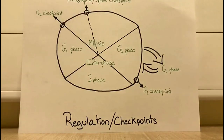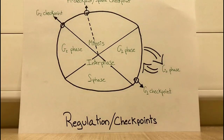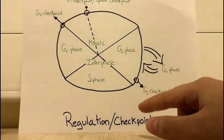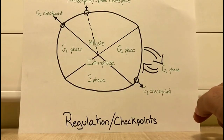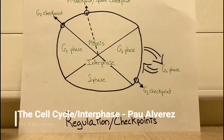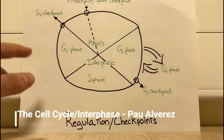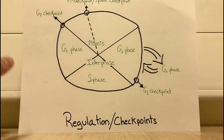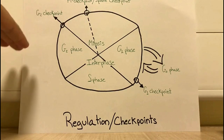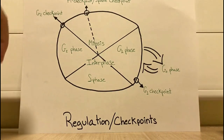Finally, we have the regulation of the cell cycle. The cell cycle is regulated by checkpoints. The main checkpoints are the G1 checkpoint, located in the G1 to S phase transition. The next checkpoint is the G2 checkpoint, which is located in the G2 phase to mitosis transition. The final checkpoint is located at the end of the metaphase, called the M checkpoint or spindle checkpoint.